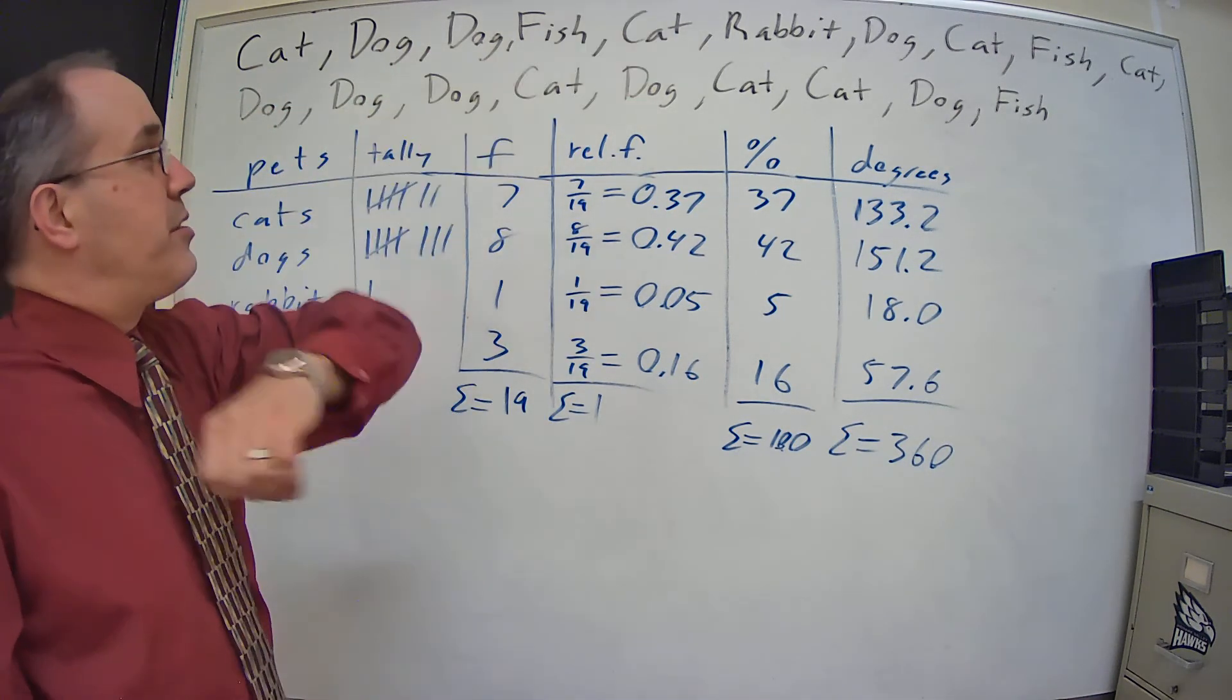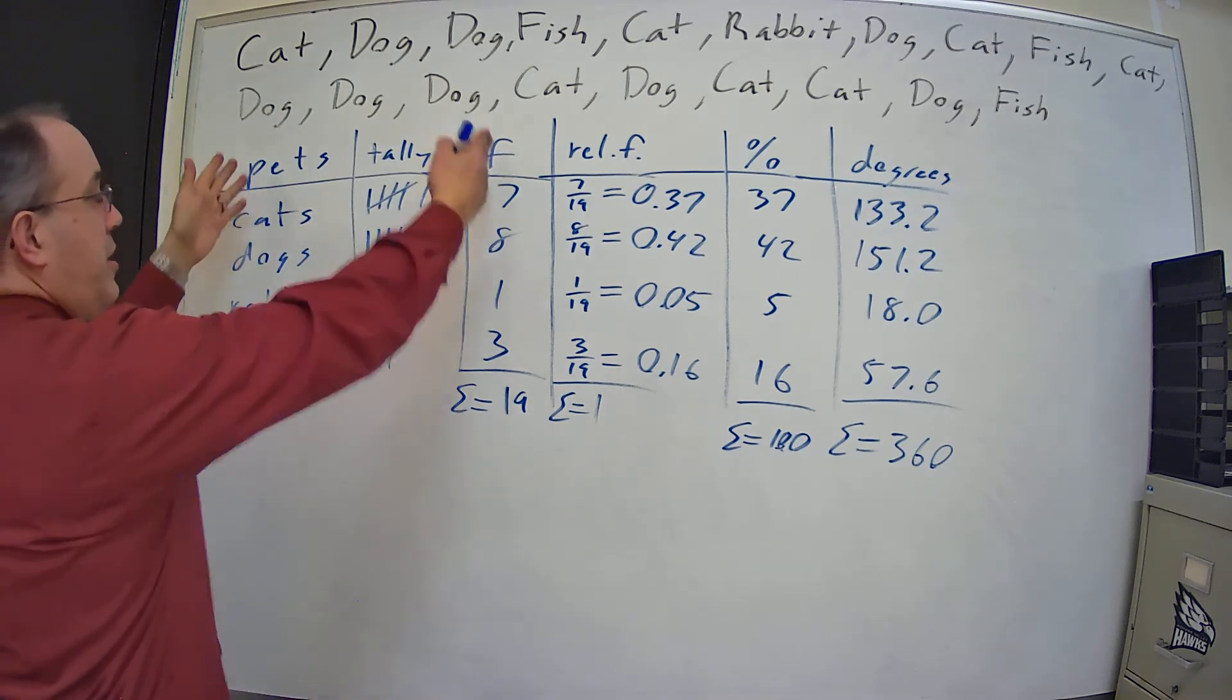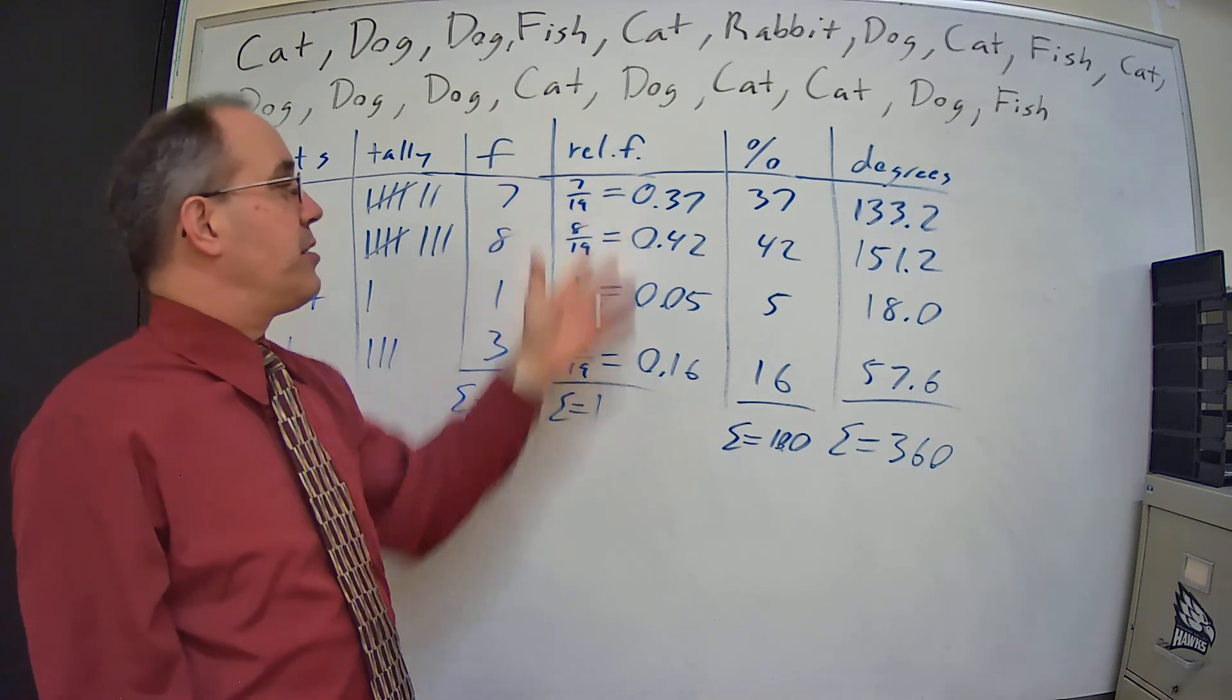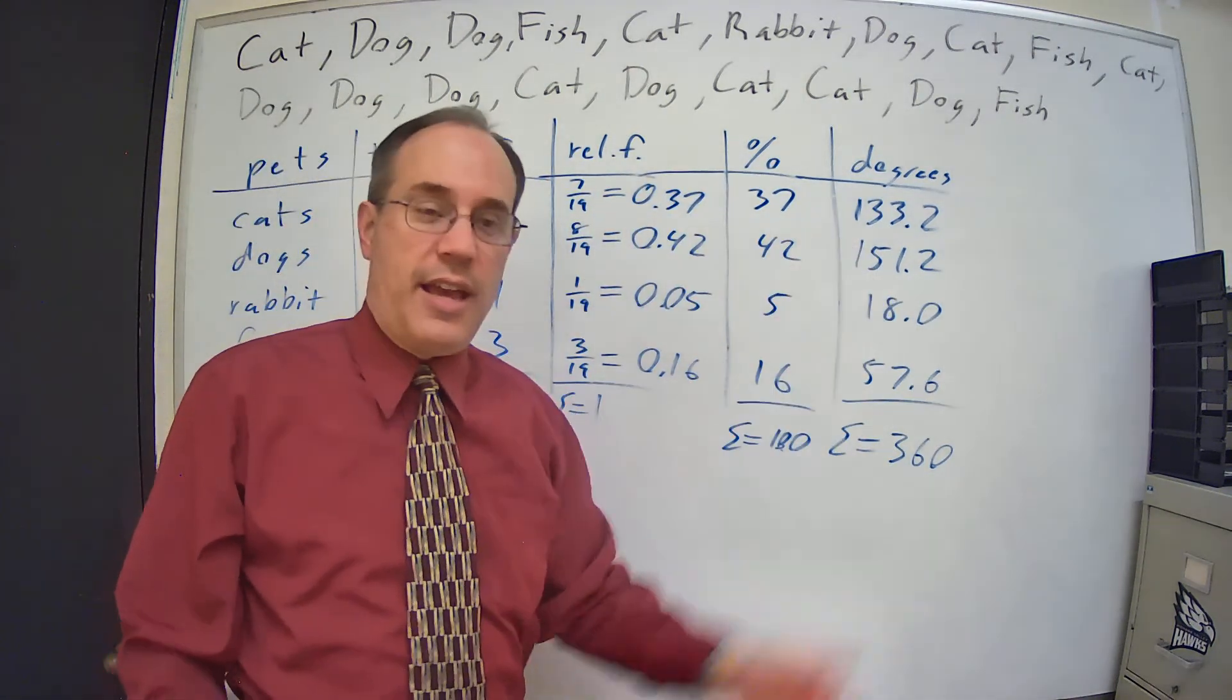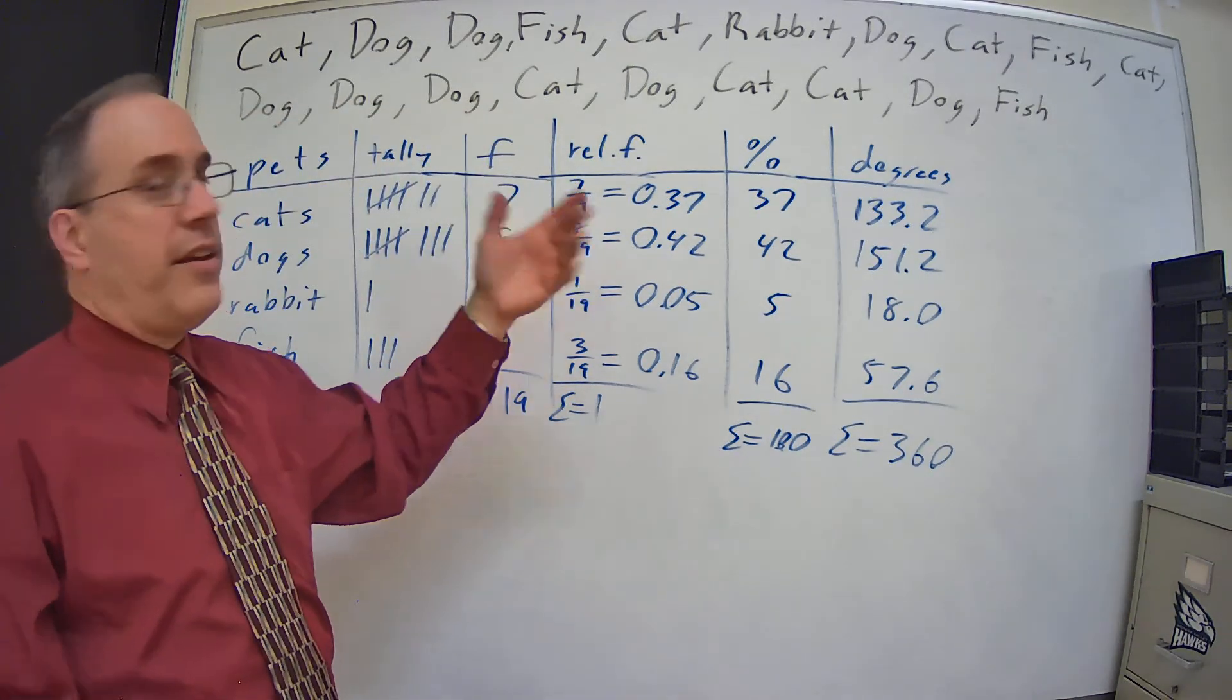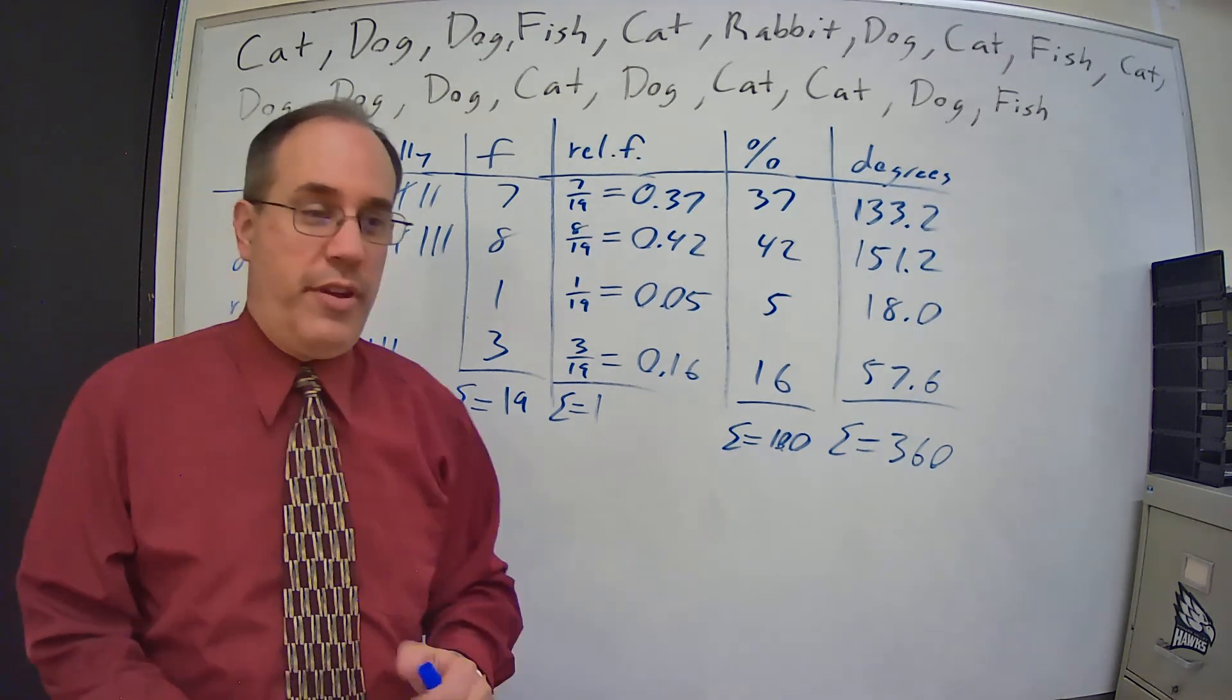So there we go. Starting with this list of pets, we created a frequency distribution, and then we also found the relative frequencies, the percents, and the degrees. So we're going to go from this and create some graphs, and that'll be in the next video.